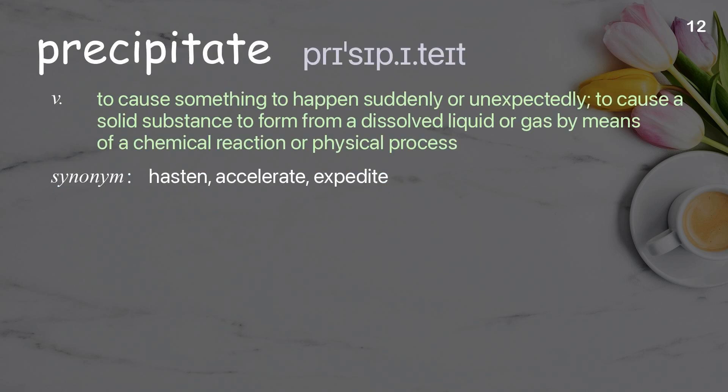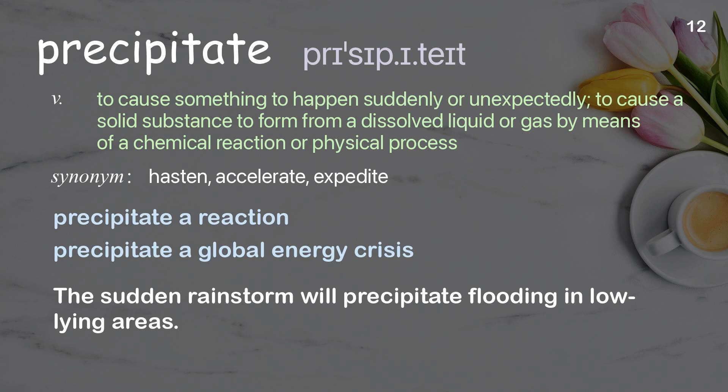Precipitate. To cause something to happen suddenly or unexpectedly; to cause a solid substance to form from a dissolved liquid or gas by means of a chemical reaction or physical process. Example: A global energy crisis can precipitate change. The sudden rainstorm will precipitate flooding in low-lying areas.